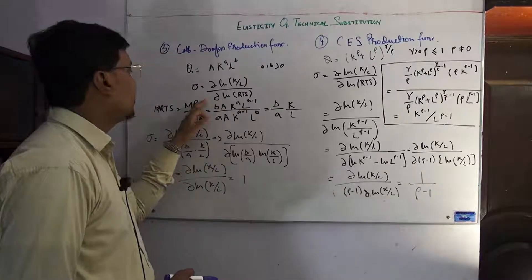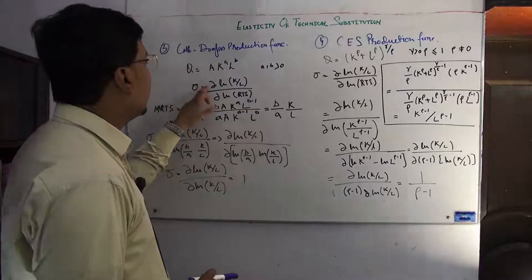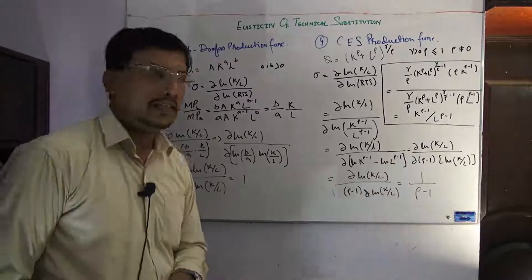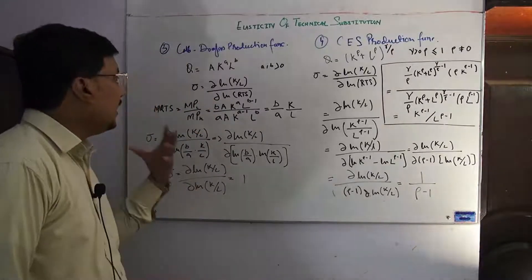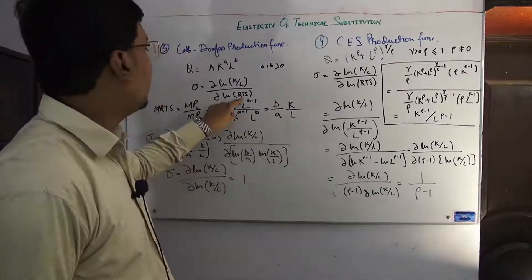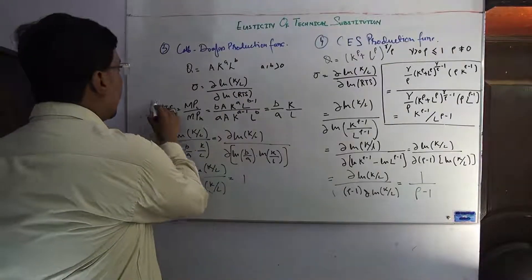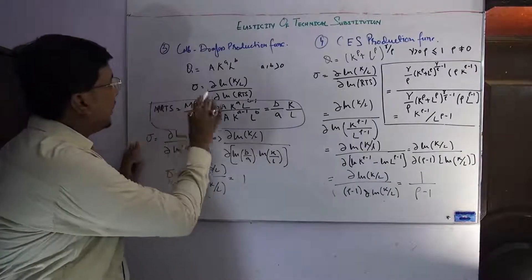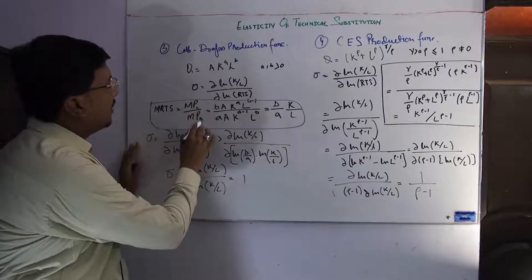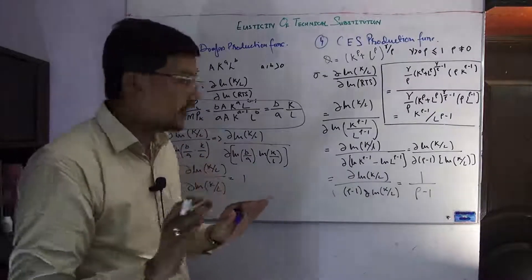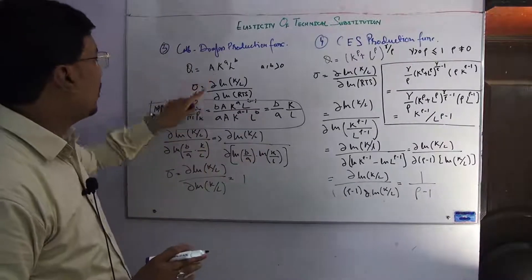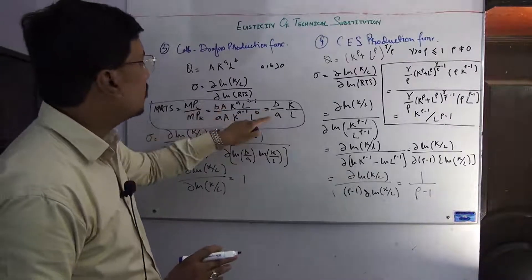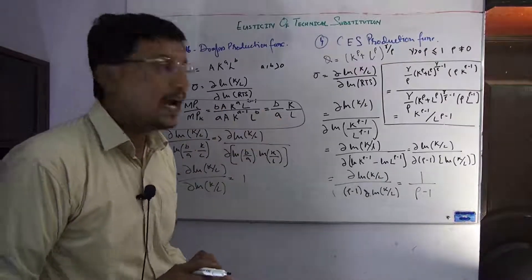We have the formula for the elasticity of technical substitution: sigma equals the partial derivative of the natural log of K over L with respect to the partial derivative of the log of RTS. First, we calculate the RTS. Using the marginal productivity of labor and marginal productivity of capital, we take their simple ratio and solve. For the Cobb-Douglas function, the RTS equals (β/α) times (K/L).